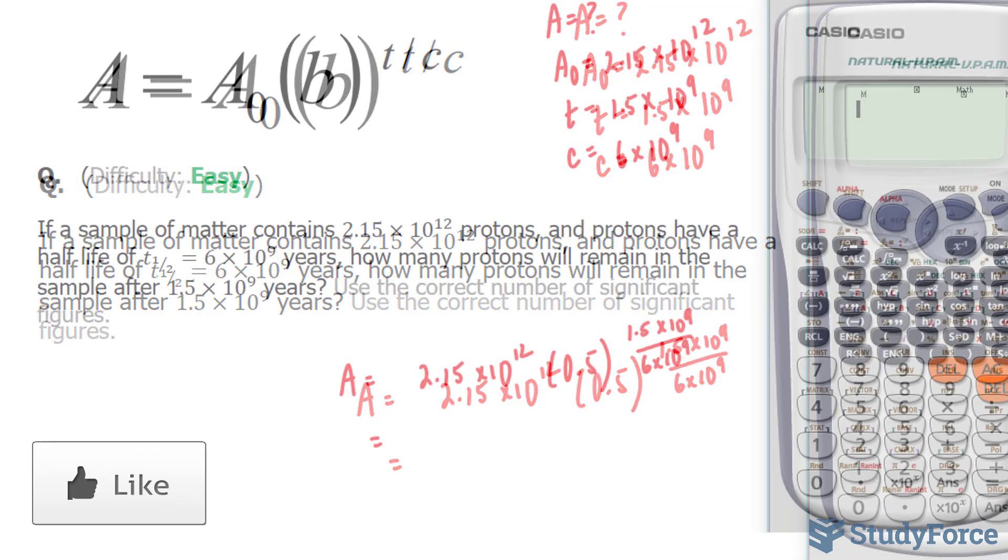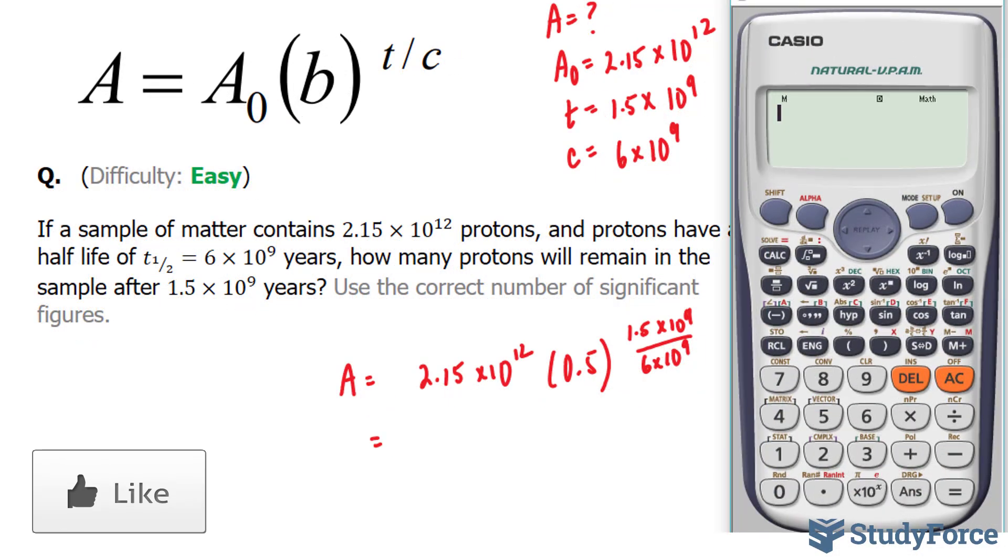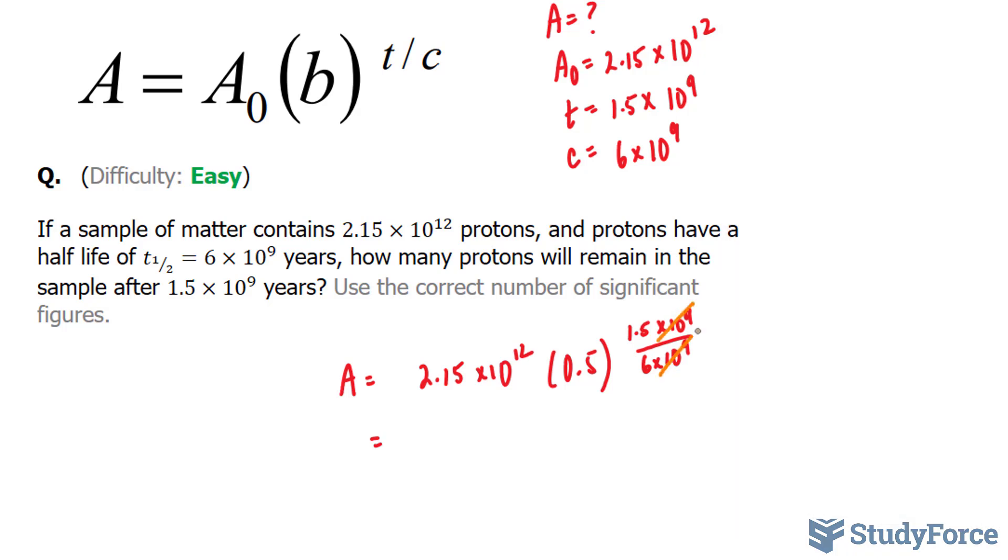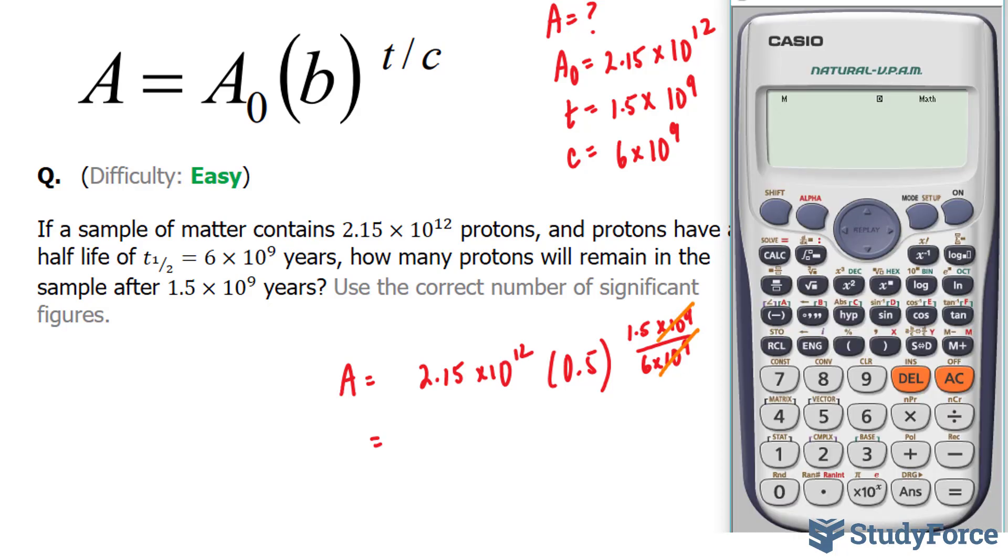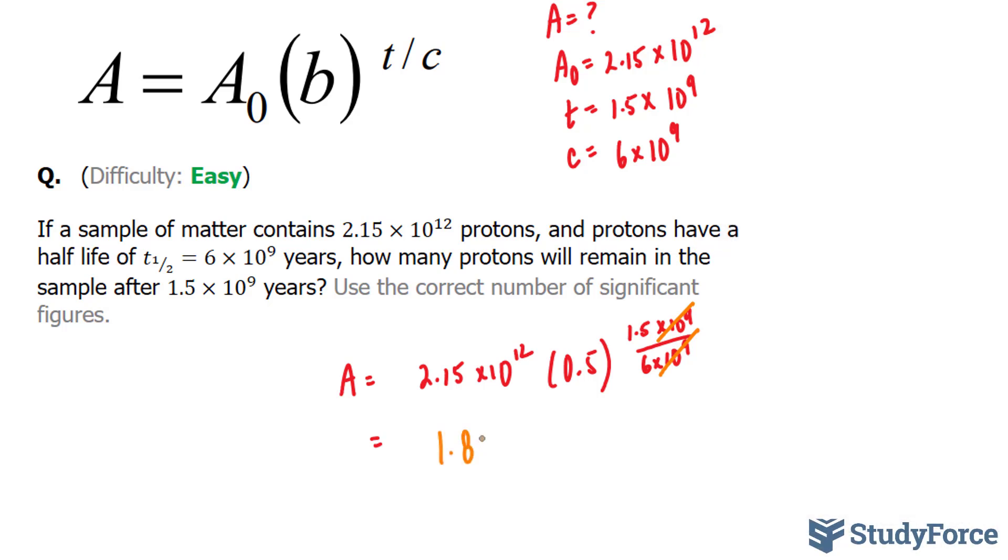Using our calculator, I'm going to calculate this in chunks. I'm going to cross out what we have here, 10 to the power of 9. So we have 0.5 to the power of 1.5 divided by 6. And I'm going to multiply this now by 2.15 times 10 to the power of 12, which gives me 1.80 times 10 to the power of 12.